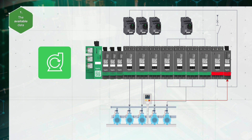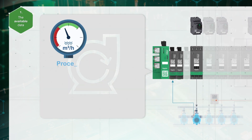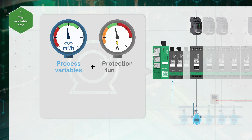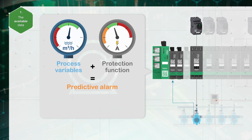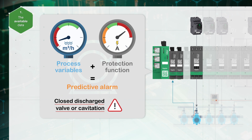Now let's focus on this application of pumping to see how process variables and predictive alarms can help avoid machine outage. For the pump avatar, we define the analog value from the flow meter as a process variable input. Combined with two protection functions, we define two predictive alarms: clogged inlet or closed valve in case of low flow and undercurrent; closed discharge valve or cavitation in case of low flow and overcurrent.